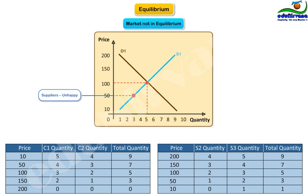they will want to produce lesser units per supplier. That is, quantities supplied by supplier 2 and supplier 3 will reduce to 1 and 2 units respectively.